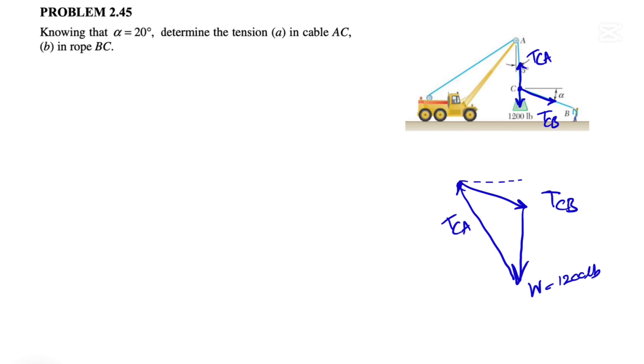So what we have information about is this angle here, which is the alpha that we have. So this is 20 degrees. And also we know that TCB is making 5 degrees and since the dotted lines are perpendicular to each other,